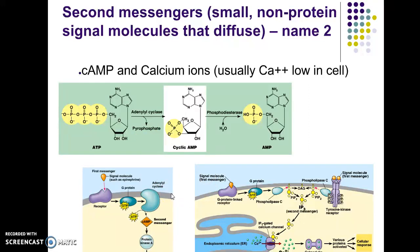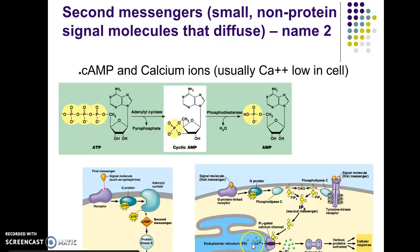Calcium ions can also be used as a second messenger. Your signal molecule comes in and binds to the G protein-linked receptor. Once activated, it diffuses across and activates phospholipase C, which activates PIP2 and DAG. Those activate the second messenger IP3, which can then go through the IP3-gated calcium channel, causing calcium ions to move into the cell. Because there's usually a low concentration of calcium ions in the cell, adding more calcium ions can trigger cellular responses.